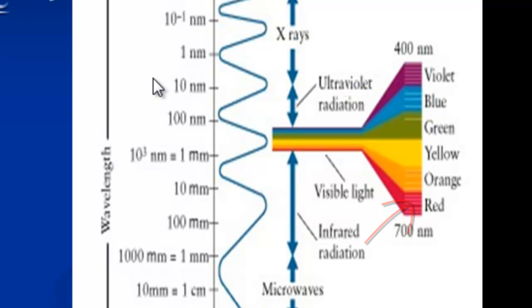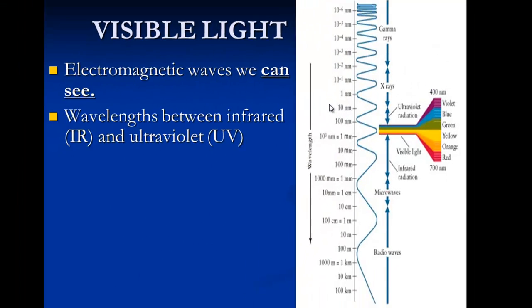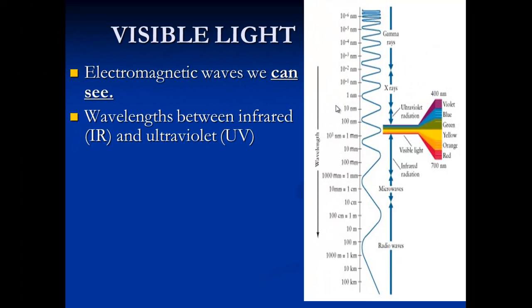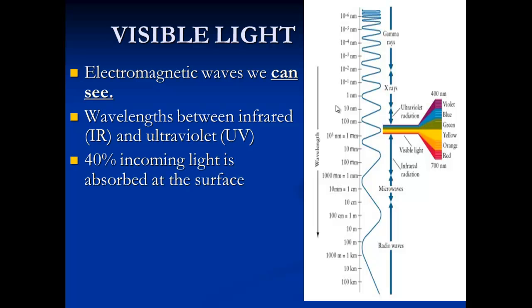Not only do we use visible light for sight, but plants use visible light for photosynthesis. About 40% of the incoming visible light reaches the surface. The rest is reflected by clouds, ice, and other high albedo surfaces. Remember, albedo is reflected light.